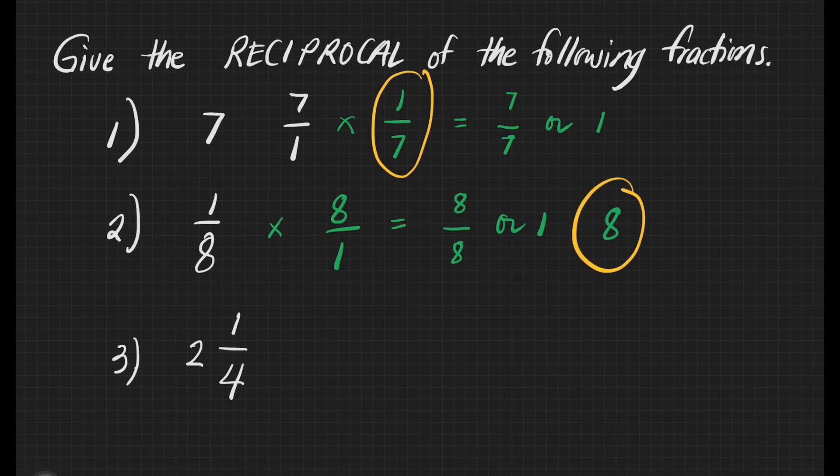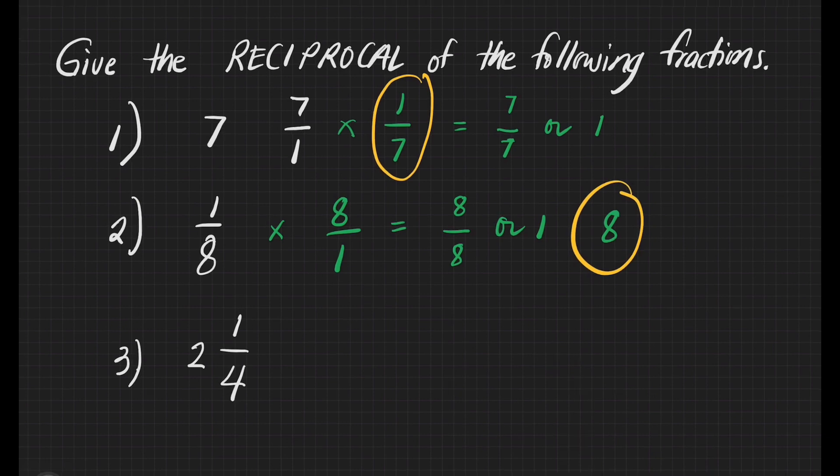Number 3, we have 2 and 1/4. We cannot interchange right away the numerator and denominator because what we have here is a mixed number. This is a different case. We have to change first 2 and 1/4 to its improper fraction. You still remember how to do that? Let's do it here.